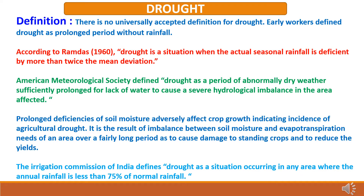What is drought? There is no universally accepted definition for drought. Early workers defined drought as a prolonged period without rainfall. According to Ram Dass, drought is a situation when the actual season rainfall is deficient by more than twice the mean deviation. The American Meteorological Society defined drought as a period of abnormally dry weather sufficiently prolonged for lack of water to cause a severe hydrological imbalance in the area affected. The Irrigation Commission of India defines drought as a situation occurring in any area where the annual rainfall is less than 75% of normal rainfall.